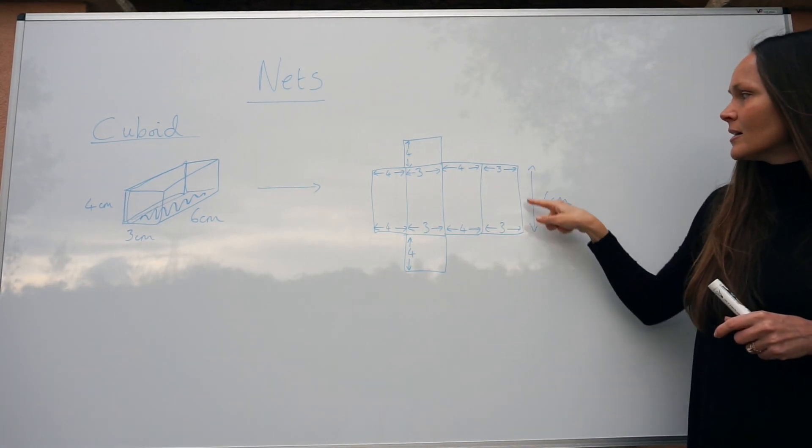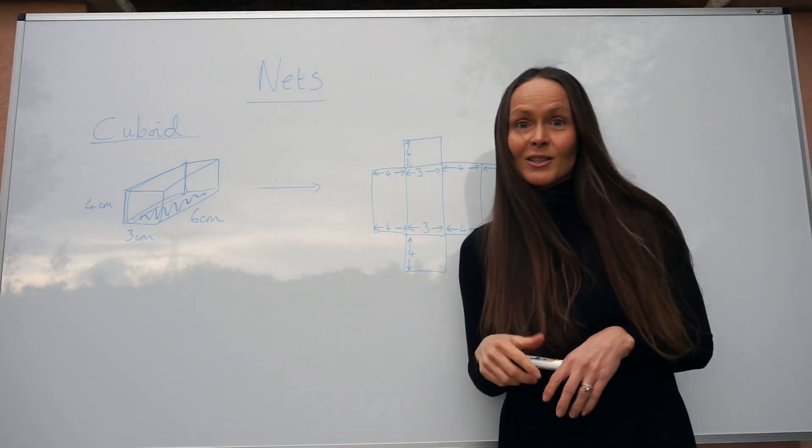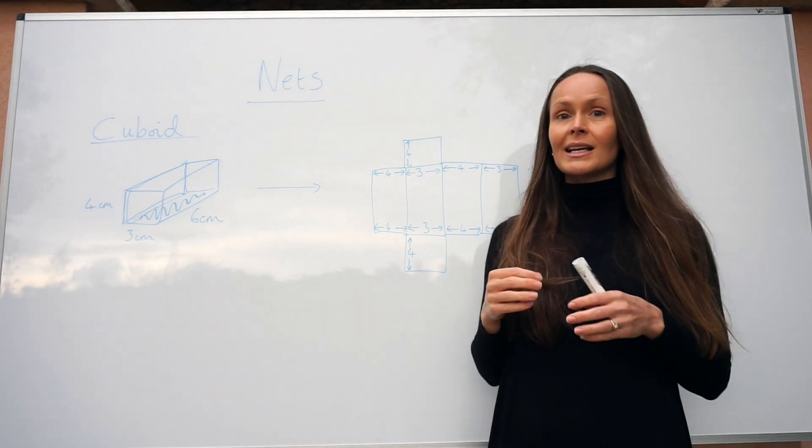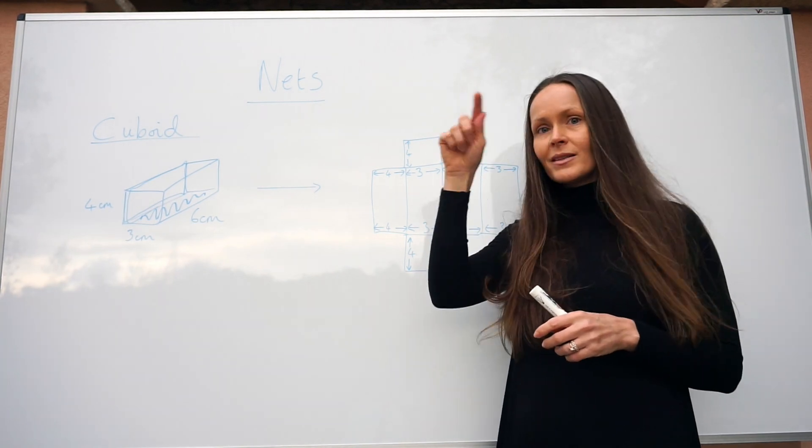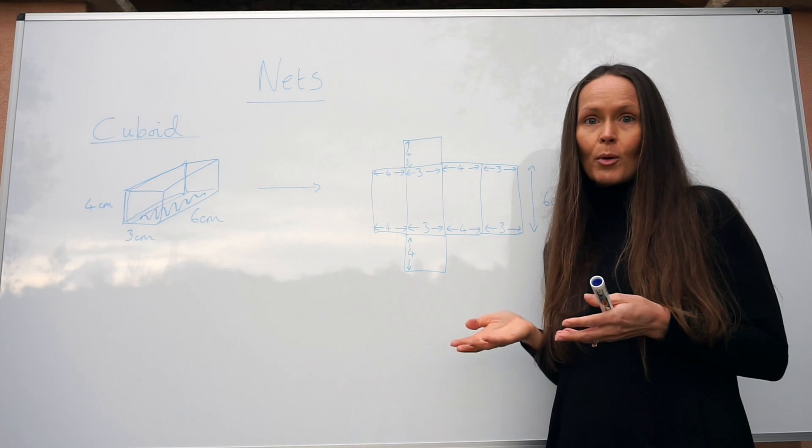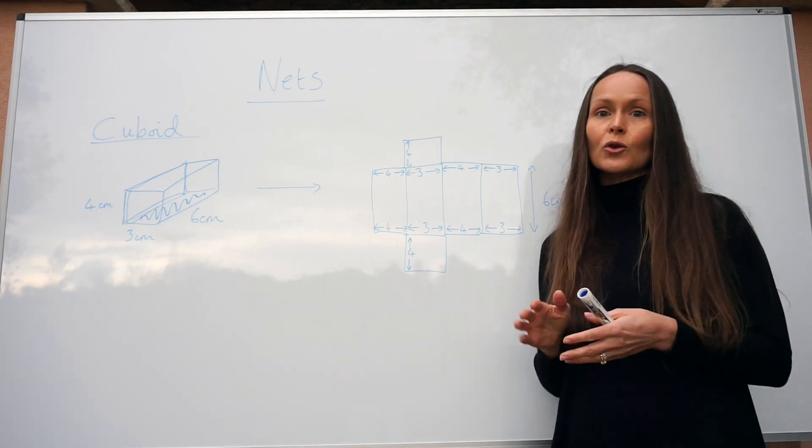My diagram is a little bit messy. I haven't used a ruler; it's not to scale. When you do an exam they will usually give you a square grid of one centimeter by one centimeter, and you would need to draw the net upon this. They might start you off and draw one or two of the faces and you would need to finish it off.